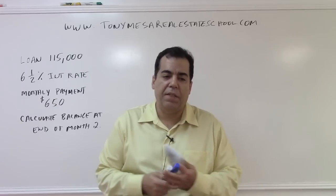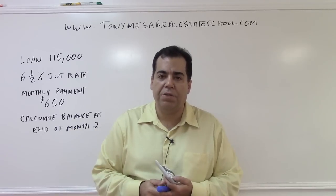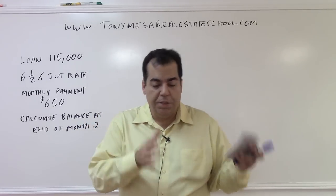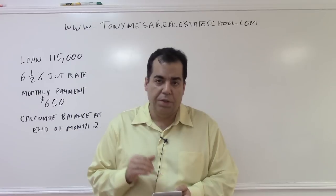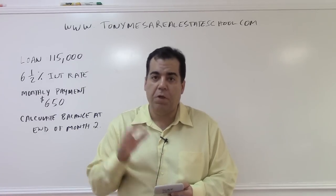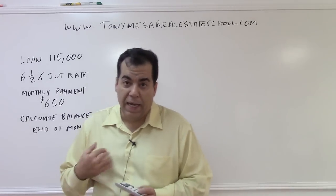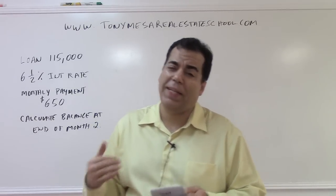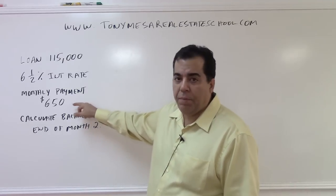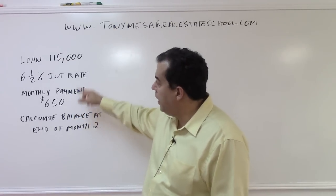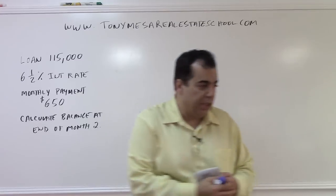Now in real life, if you have a loan of $115,000 at a given interest rate for a certain number of years, you would plug it into an amortization app, a website, or a financial calculator to find the monthly payment. But the formula to calculate the monthly payment is extremely long. On the state exam, they will give you the monthly payment, the loan amount, and the interest rate, and then ask you to calculate the balance at the end of month two.